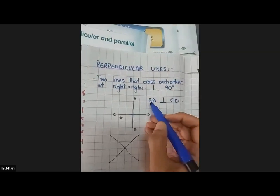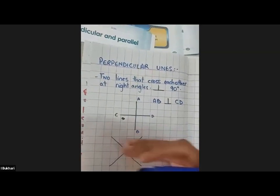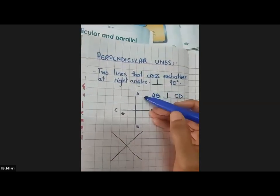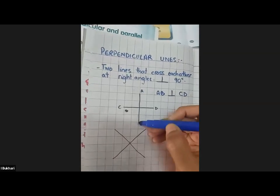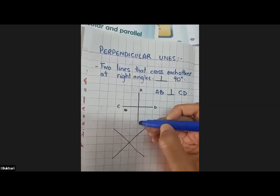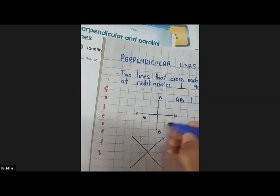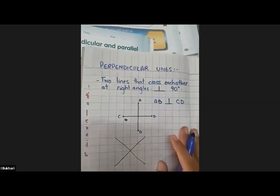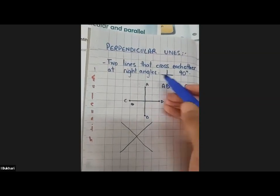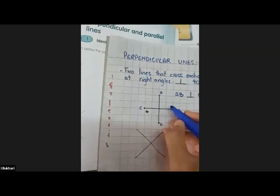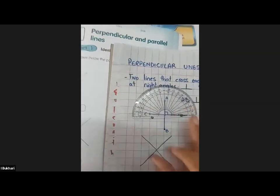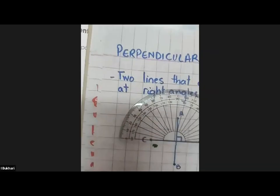We use these letters to name lines because how else would we refer to them, right? So we choose some letters and we name their ends or their points. So this can be point A, this can be point B, this can be point C, and this is point D. So we can say that line AB is crossing line CD at right angles. And with the help of a protractor, we can double check whether this is true.